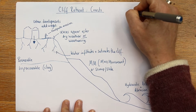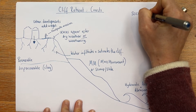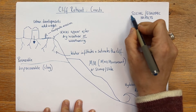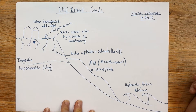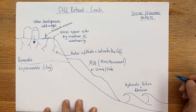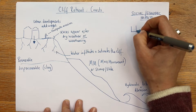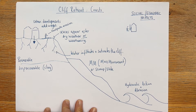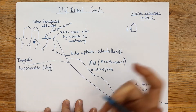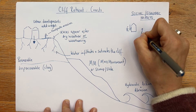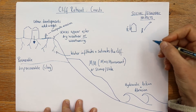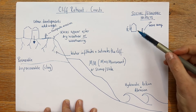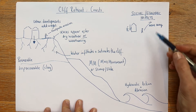This has quite big social and economic impacts. There have been case studies in the UK where hotels, businesses, homes, and caravans have all fallen into the sea, so it can be a really big problem. Even if your house hasn't fallen into the sea, the value of your house drops significantly if you're in an area of potential cliff retreat. People living there often move away, because if the land value is down or houses are vulnerable, it's going to cause people to go.